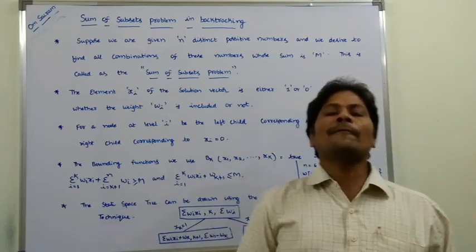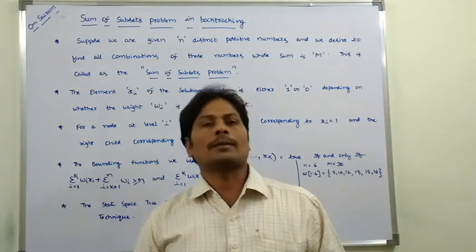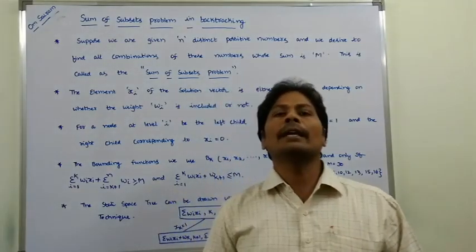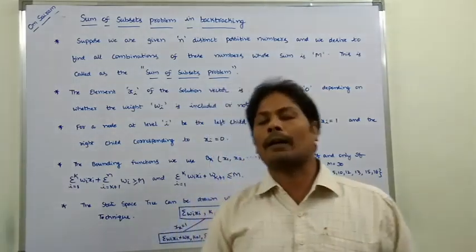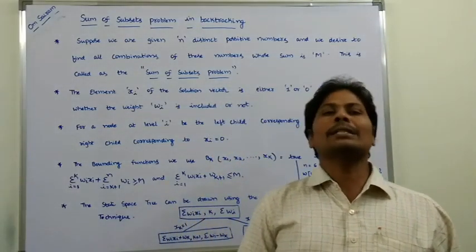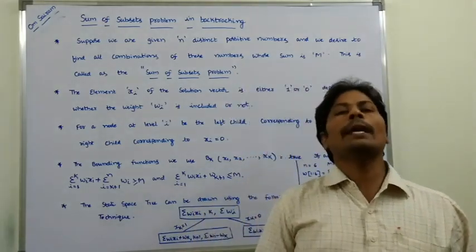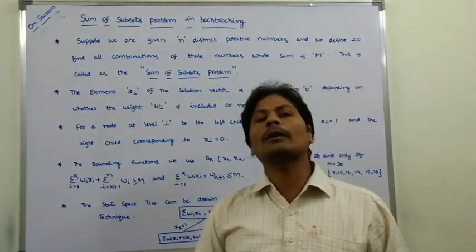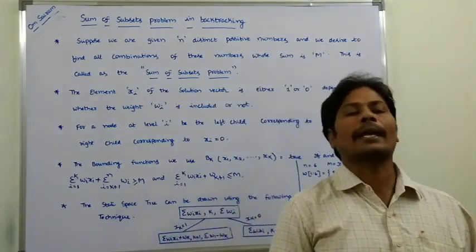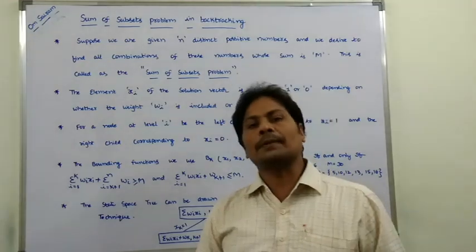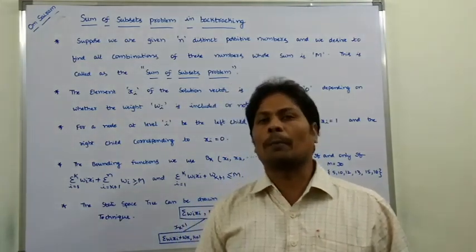The sum of subsets problem can be stated as follows. Suppose we are given n distinct positive integers, or numbers. These numbers are called weights. We have to find out all combinations of these numbers whose sum is capital M. This is called the sum of subsets problem.